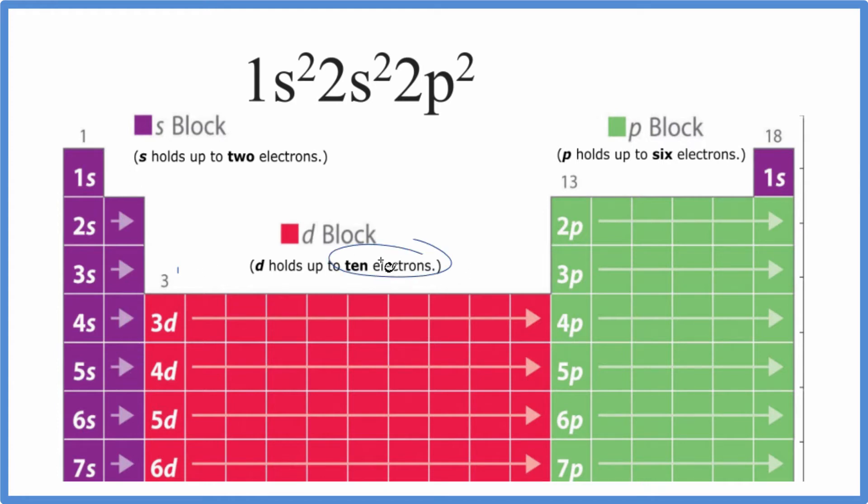Then we go to the d block. That holds up to ten. So we have d1 all the way to d10 here. And then for p, we have the p block. p holds up to six electrons. p1, 2, 3, 4, 5, and 6.